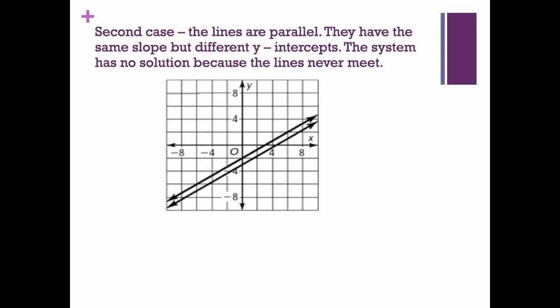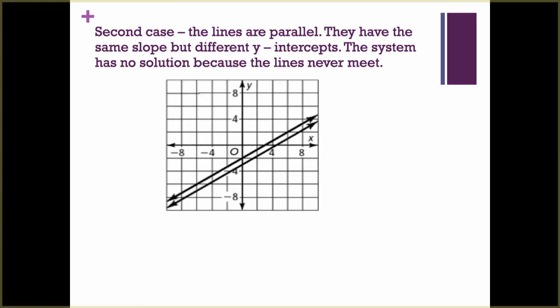The second case: the lines are parallel. In this case they'll have the same slope, but their y-intercepts will be different. When this happens, we write that the system has no solution. For the previous cases we wrote down the point where they crossed; for this case, I want to see you writing 'no solution.' You must understand that when they don't cross, they're never going to cross, and there's no way to solve the system.